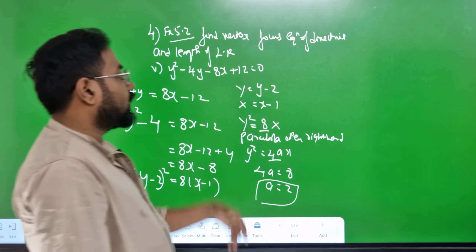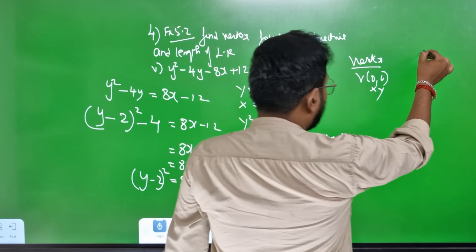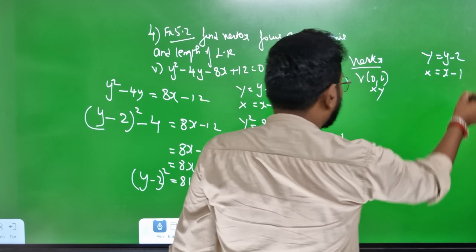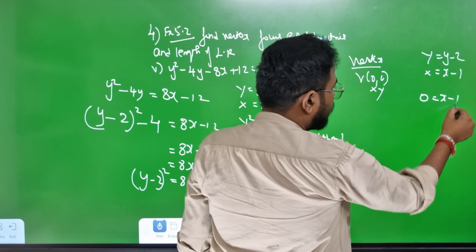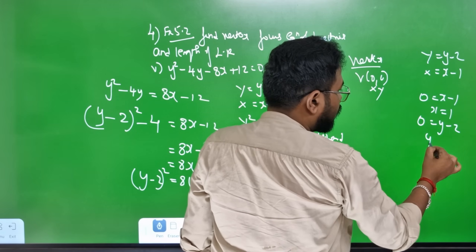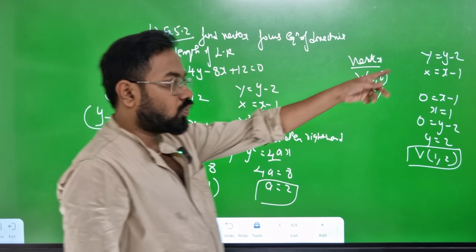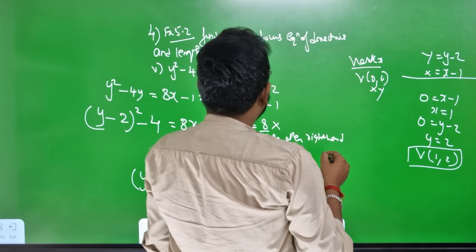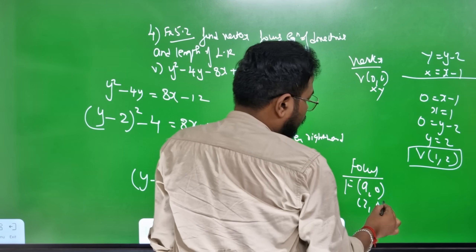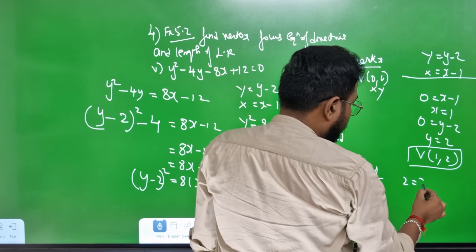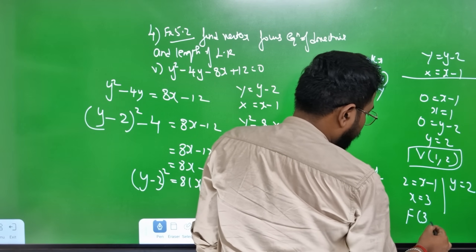Find the vertex. The vertex formula is (0, 0) in capital X, capital Y. Capital Y equals y minus 2. For x equals 0: x minus 1, so x equals 1. For capital Y equals 0: y minus 2, so y equals 2. Vertex is (1, 2). You can see the vertex.